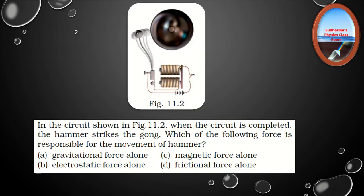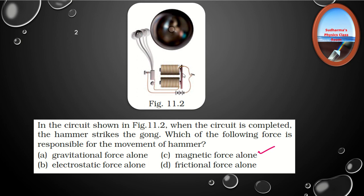Question 2: In the circuit shown in the figure, when the circuit is completed, the hammer strikes the gong. Which force is responsible for the movement of the hammer? Looking at the figure, this is an electric bell, and an electric bell works with the help of an electromagnet. When the switch is on and electric current passes through the circuit, the soft iron core becomes a magnet and attracts the hammer towards it, causing it to strike the gong. So the force responsible is magnetic force.